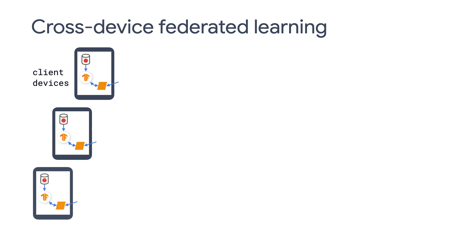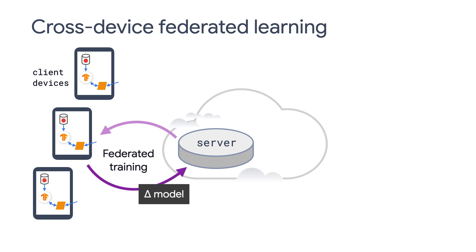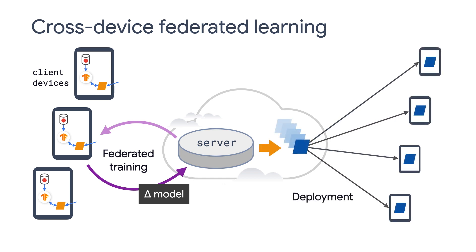Let's walk through a cross-device federated learning example to help you understand how it works in practice. We first create a randomly initialized model on a central server and dispatch the model to a random subset of client devices. The client devices will then calculate their own model updates based on the local user data, usually done through on-device learning. The random subset of client devices selected in the first step will send their updates to the server. The server will then aggregate the model updates together to produce a new model. This process is iterative and can be performed many times. At the end of training, final models are deployed to all client devices.